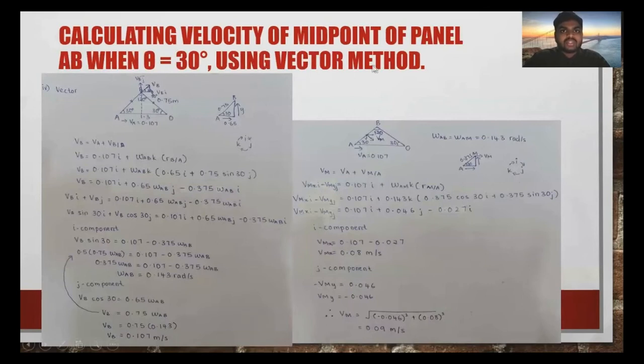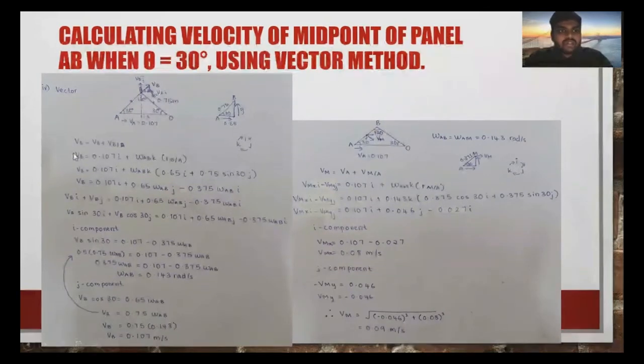Same approach using the vector method. Using this formula, I can find my omega AB, which is 0.143, and velocity of B, same with velocity of A. And using the omega, I can find my VM using this formula. Finally, my VM is 0.09 meters per second, same as with the IC method.